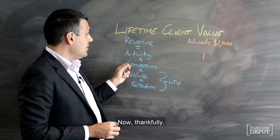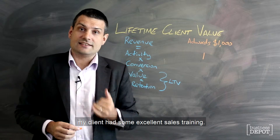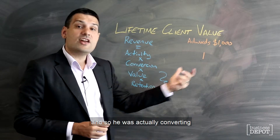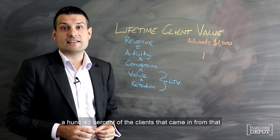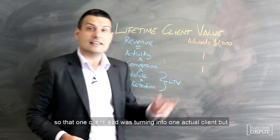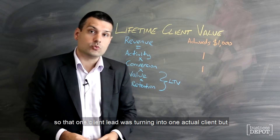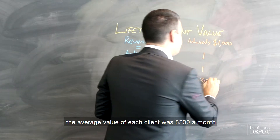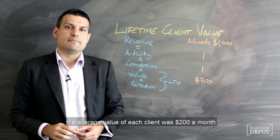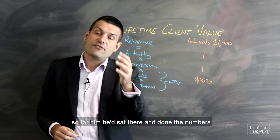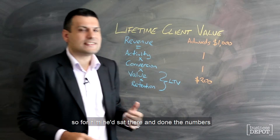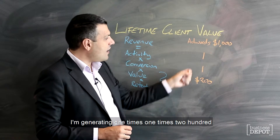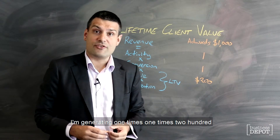Thankfully, my client had some excellent sales training — he was using the gratitude sales model — and so he was actually converting 100% of the clients that came in from that. So that one client lead was turning into one actual client. But the average value of each client was $200 a month. So he'd done the numbers and gone: for every $1,000 I spend on AdWords, I'm generating one times one times $200.